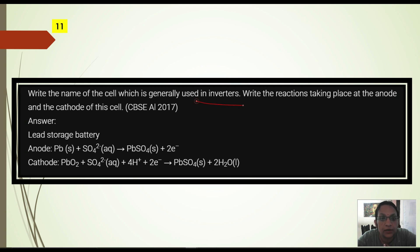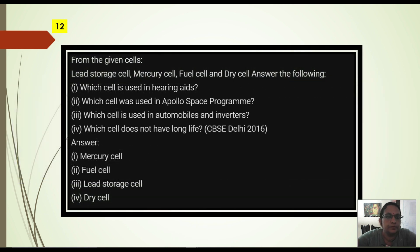Next question. Write the name of the cell which is used in inverters. In inverter we use lead storage battery. Reaction at anode: lead plus sulfate ion forms lead sulfate plus 2 electrons. At cathode: PbO2 plus sulfate plus H+ plus electrons forms PbSO4 and water.